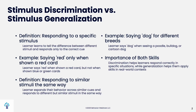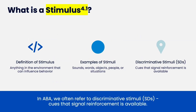The definition of stimulus discrimination is to tell the difference between different stimuli and respond only to the correct cue. Saying the word red when shown a red car is stimulus discrimination, and not saying red when shown a green car. Stimulus generalization is responding to stimuli in the same way — the learner expands their behavior across similar cues and responds to different but similar stimuli in the same way. Saying dog for many different breeds of dogs. Both skills are really important: discrimination helps people respond correctly, while generalization helps them apply the skills in real-world context.